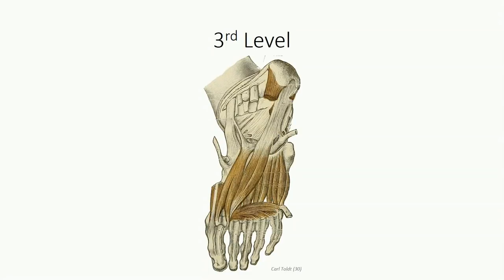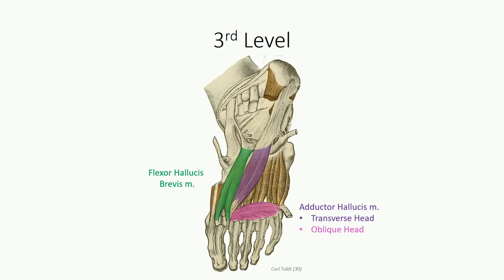This brings us to the third plantar layer of muscles. We first look at flexor hallucis brevis, which originates off the cuboid and lateral cuneiform bones and inserts bilaterally on the base of the proximal phalanx. As with flexor pollicis brevis in the hand, it's a flexor of the great toe up to the metatarsophalangeal joint. Next is adductor hallucis, which originates as two separate bands: the oblique head comes off the base of metatarsals 2 through 4, and the transverse head off the ligament surrounding the metatarsophalangeal joints. It then attaches to the lateral side of the base of the proximal phalanx of digit 1.